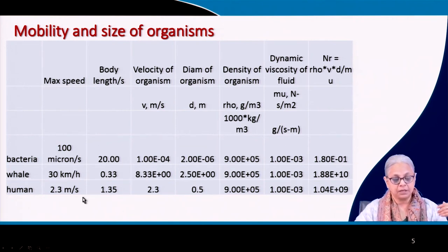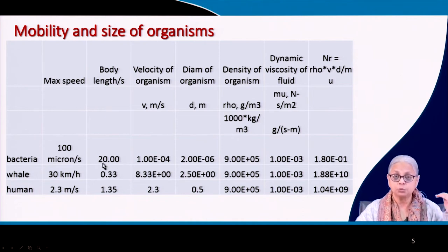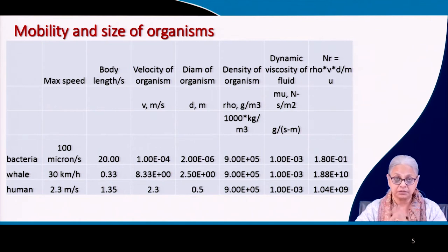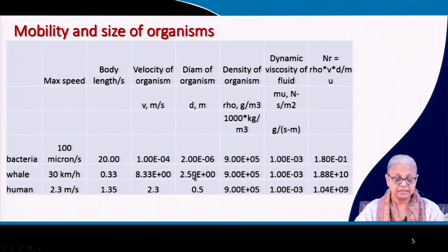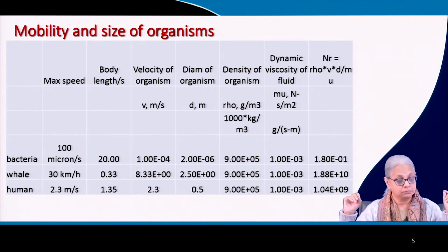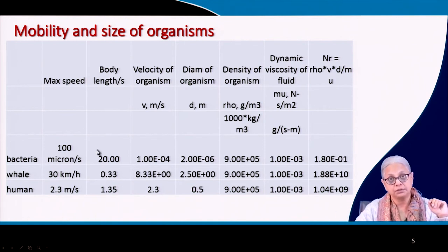Converting to body lengths per second, the bacteria is moving 20 body lengths per second — much faster on a relative scale than a whale or a human being, even though we normally think of whales as moving very fast in water. In absolute terms of meters per second it is not much, since they are tiny organisms not visible to the eye. But on a relative scale you cannot compare a micron-sized organism with a 2.5-meter-diameter whale — body length per second gives the sense of relativity.